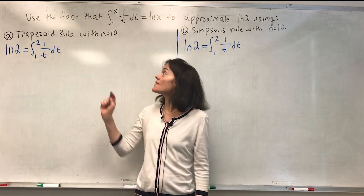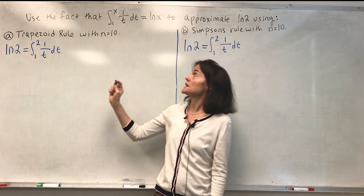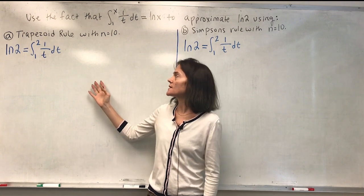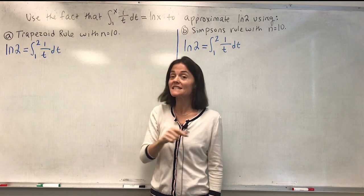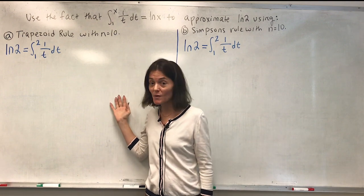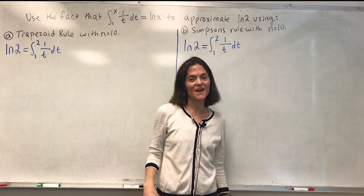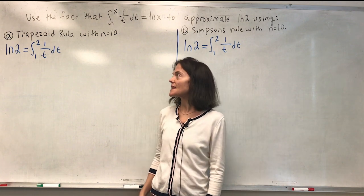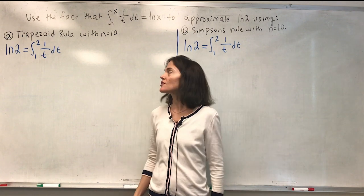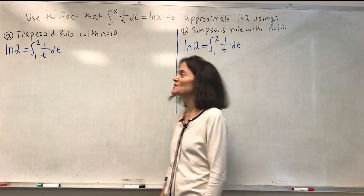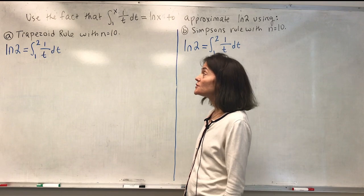And if you look at the graph of y equals 1 over t between 1 and 2, then you look at what the regions, the areas that the trapezoid rule is calculating and the areas that Simpson's rule is calculating, you will see that they look very much like the area under the curve, which is telling you both of these will be pretty close to the natural log of 2.